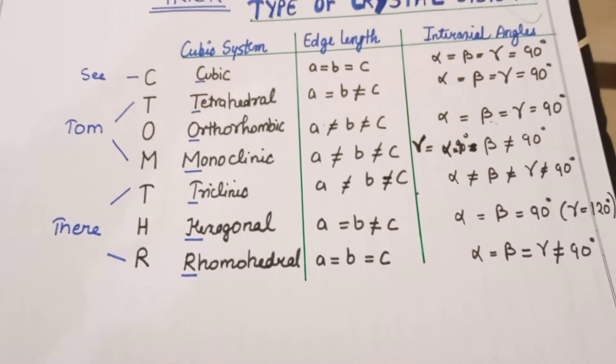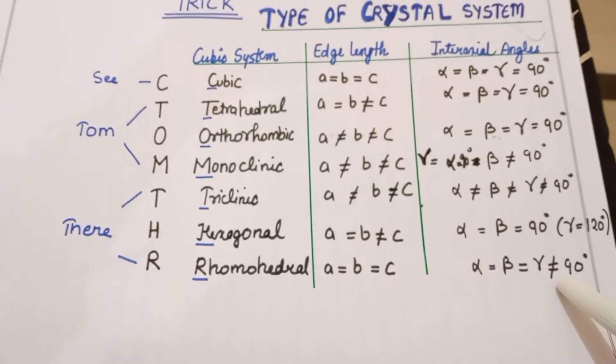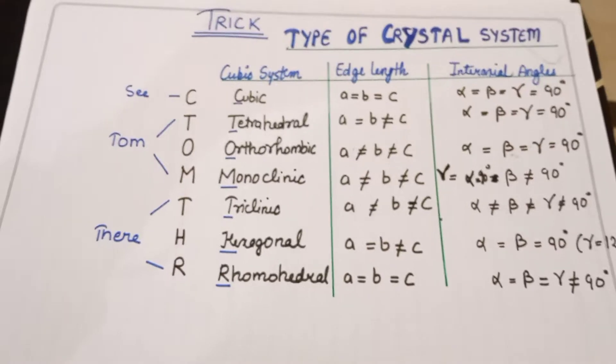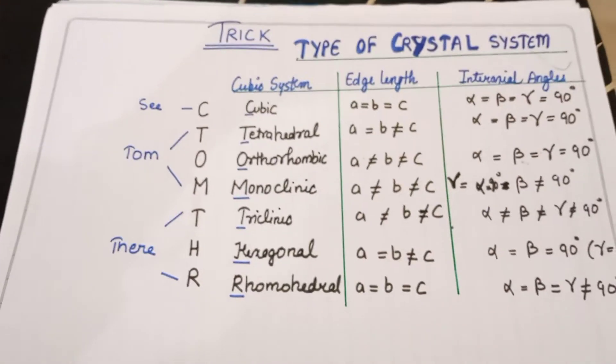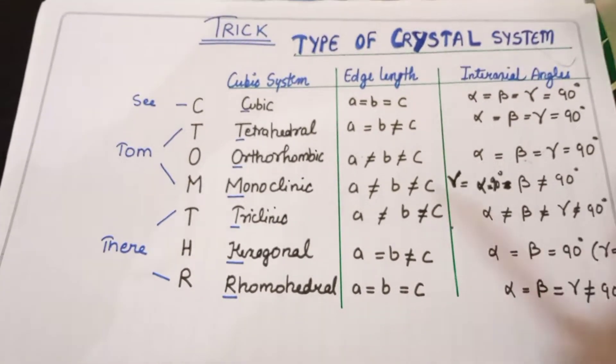The last one is Rhombohedral. In this case, Alpha equal to Beta equal to Gamma, but not equal to 90 degrees. All three — Alpha, Beta, Gamma — are equal to each other but not equal to 90 degrees.